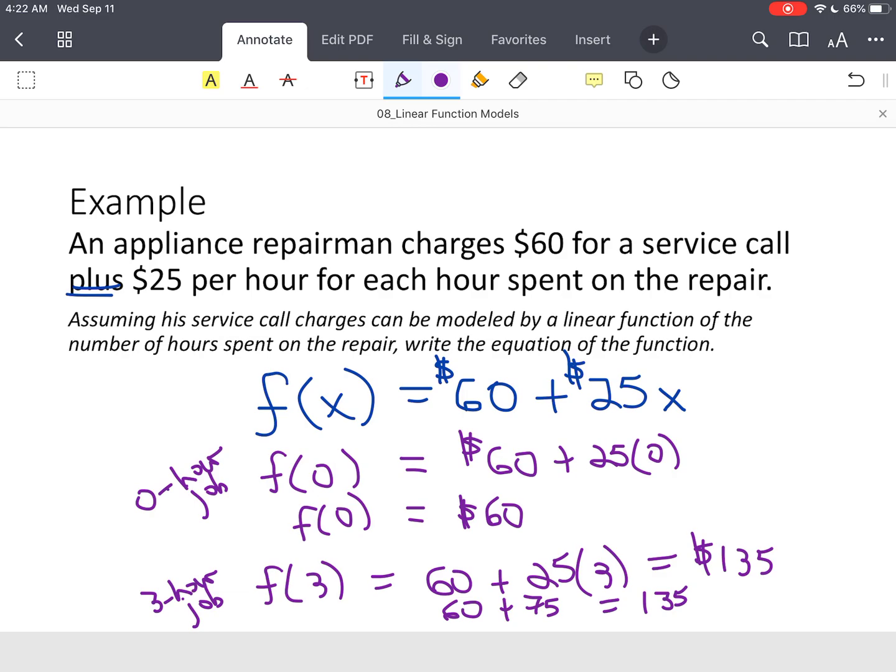Let's say he was there 10 hours, so something was really broke, he had to do it over a couple days. F of 10, still $60 plus $25 for 10 hours worth of service. That's $60 plus $250 is $310, so it's a 10-hour job.